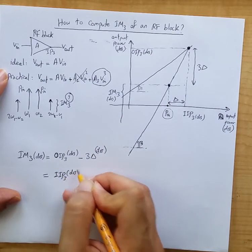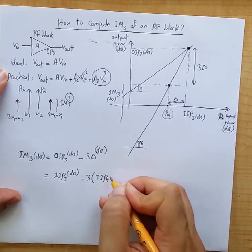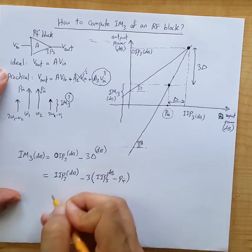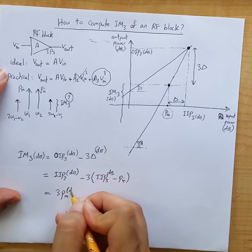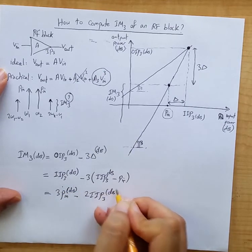This is delta minus 3 IIP3 in dB minus PN. So we get 3 PN minus 2 IIP3 in dB.